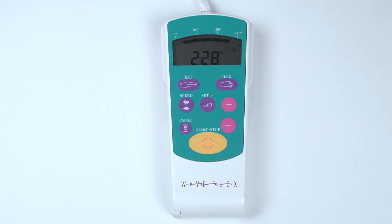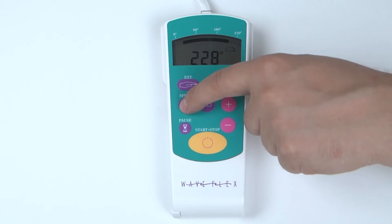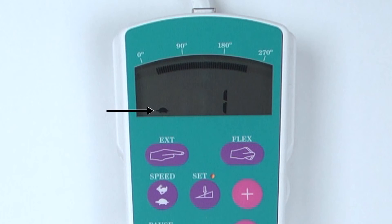To program speed while still in the set mode, press the Speed button. The LCD screen will now display the Rabbit or Tortoise depending on the present speed setting.